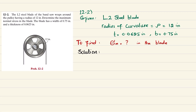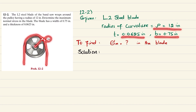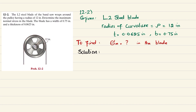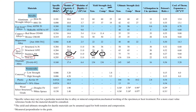Moving to Problem 12-2: the steel blade of a band saw wraps around a pulley having a radius of 12 inch. Determine the maximum normal stress in the blade. The blade has a width of 0.75 inch and a thickness of 0.0625 inch. The radius of curvature is 12 inch, and it is made of L2 steel. From the property table, E equals 29 times 10 to the power 3 ksi.